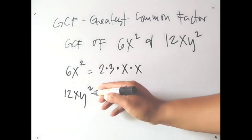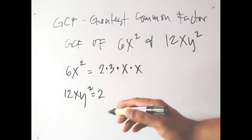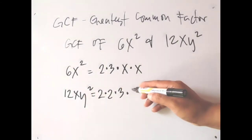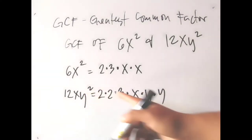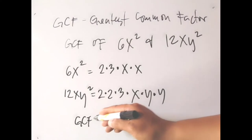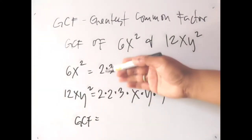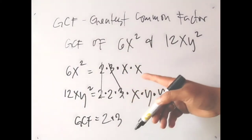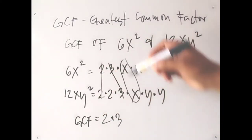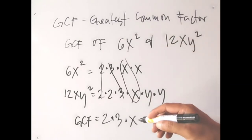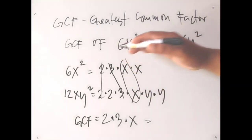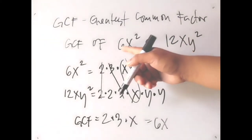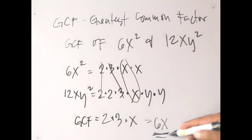For 12xy²: the prime factors of 12 are 2 times 2 times 3, then times x, times y times y (since y² = y times y). Now find the common factors: from the numbers we have 2 and 3 (giving 6); from the variables we have one x. The GCF of 6x² and 12xy² is therefore 6x.